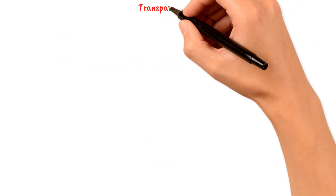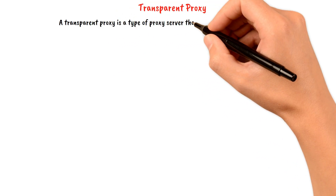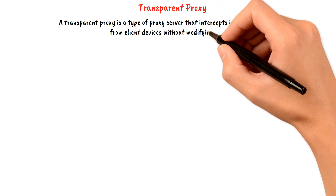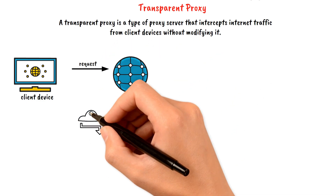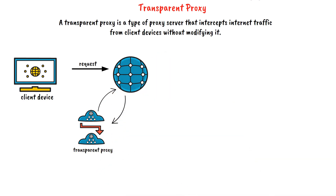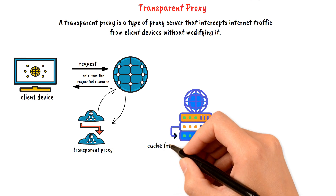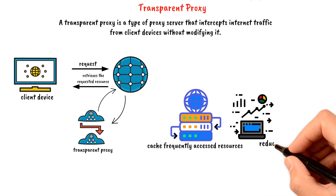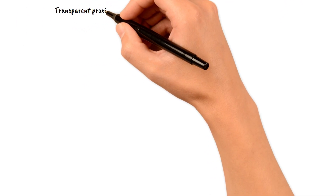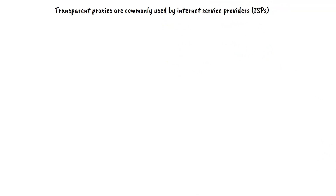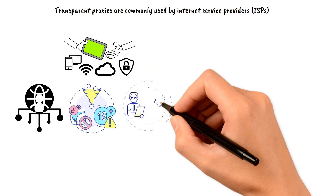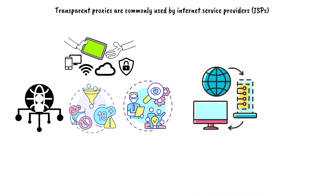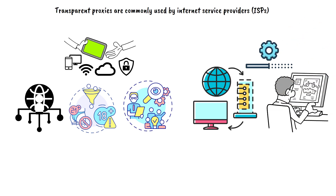A transparent proxy is a type of proxy server that intercepts internet traffic from client devices without modifying it. When a client device sends a request to access a resource on the internet, the request is first intercepted by the transparent proxy. The proxy then forwards the request to the internet, retrieves the requested resource, and returns it to the client. The main purpose of a transparent proxy is to cache frequently accessed resources, improving performance and reducing bandwidth usage. Transparent proxies are commonly used by internet service providers and organizations to enforce content filtering or monitoring policies without requiring any configuration on client devices.